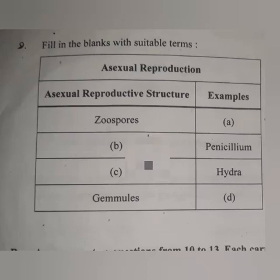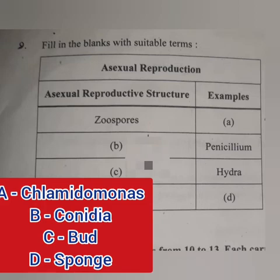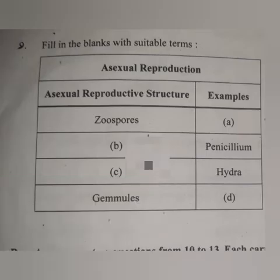Question 9: Fill in the blanks with suitable words. Answer: A. Chlamydomonas. B. Conidia. C. Bud. D. Sponge.